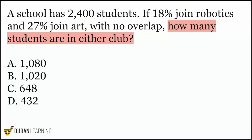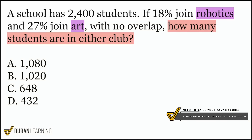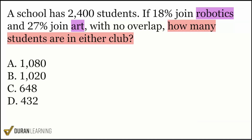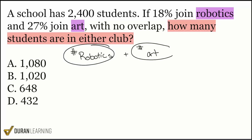When they say how many students are in either club, we're talking about students in robotics and in art. And here's how we're going to interpret this: to find out how many students are in either club, especially if they have no overlap, we're being asked to find the number of students in robotics plus the number of students in art. If you can find those two numbers, you are done — all you have to do is add them together.